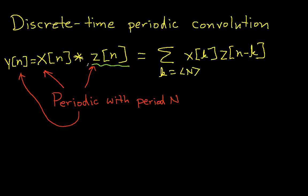Both of the signals are periodic with period N, which means that the convolution of the two signals is also periodic with period N. So Y, which is X convolved with Z, will be periodic.